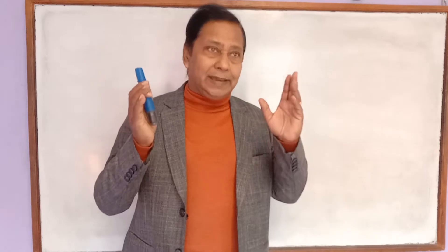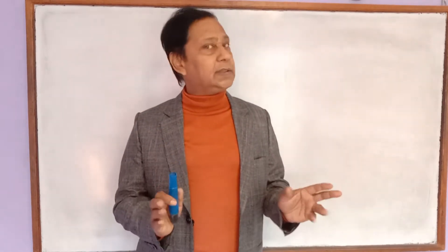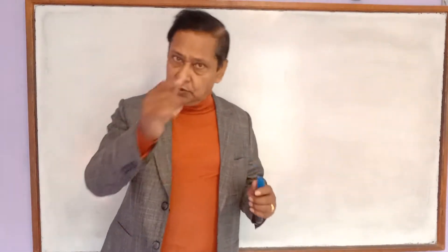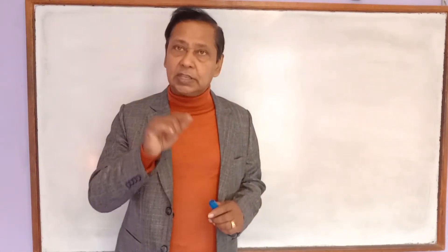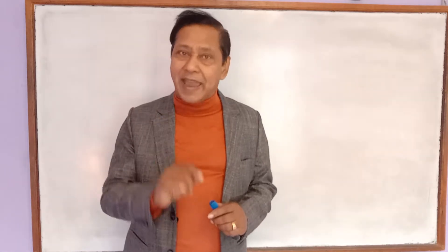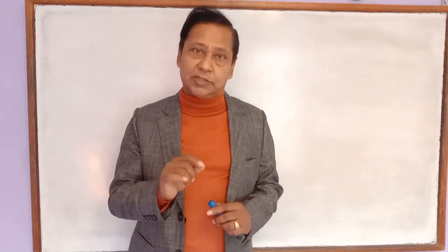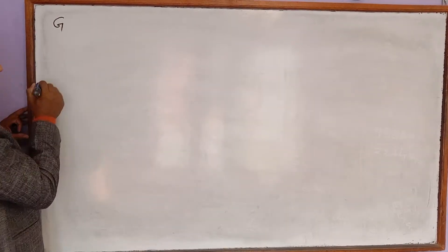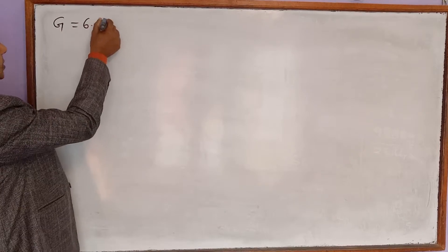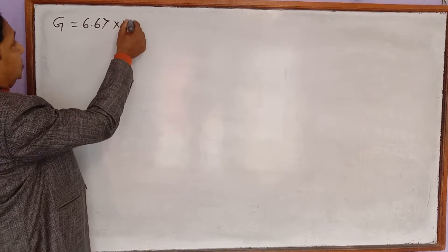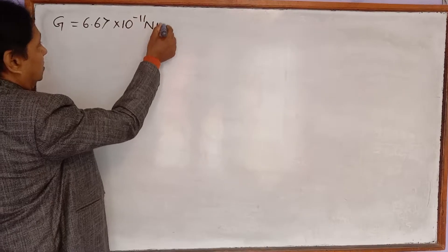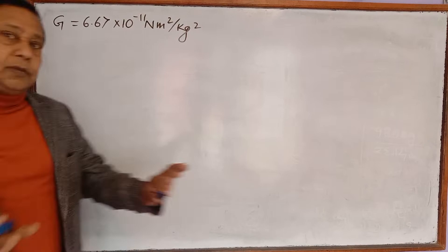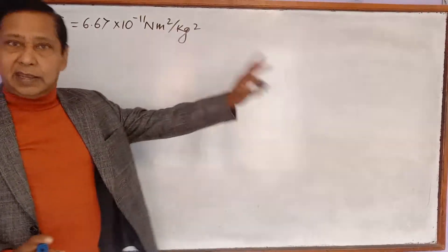Today I am going to talk about the gravitational constant. What is this value according to the SI system? The value of gravitational constant, which is denoted by capital G, is 6.67 into 10 to the power minus 11 Newton meter square per kg square according to the SI system.